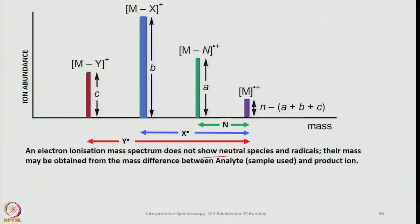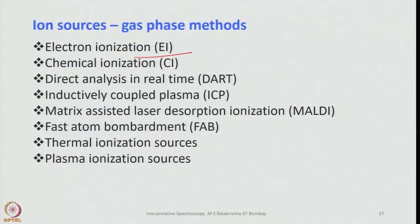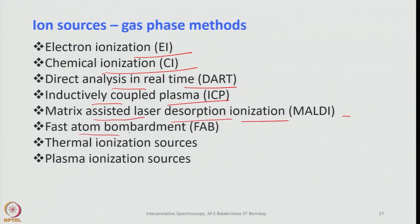In the electron ionization mass spectrum, neutral species and radicals are not observed directly — their mass may be obtained from the mass difference between the analyte and product ion. When the molecular ion peak is absent, look at the fragments and the mass difference to identify the molecular weight. Ion sources used in gas phase methods include: electron ionization, chemical ionization, direct analysis in real time (DART), inductively coupled plasma (ICP), matrix-assisted laser desorption ionization (MALDI), fast atom bombardment (FAB), thermal ionization, and plasma ionization.